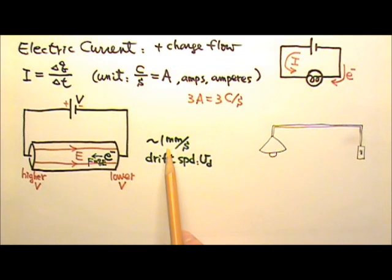But if electrons flow at such slow speed, how come a light can turn on almost instantly when we flick the switch on?